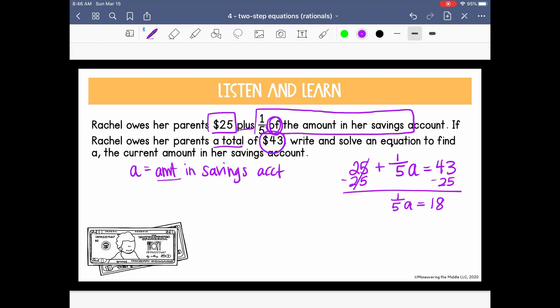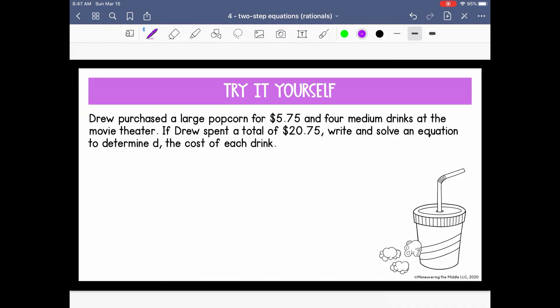Now let's get A by itself by dividing by 1 fifth. Okay, I'm going to rewrite this as multiplying by the reciprocal since the numerator was 1, and now this is going to just be 5 over 1, which is the whole number 5. Okay, so A equals 18 times 5, which is $90. Okay, and you always want to go back and ask if your answer is reasonable. Would it make sense that she has $90 in her savings account if a fifth of that is what she owes her parents plus the $25, which would get us to $43? So always go back, plug it in, make sure it is a reasonable number. Now pause the video and try this one yourself.